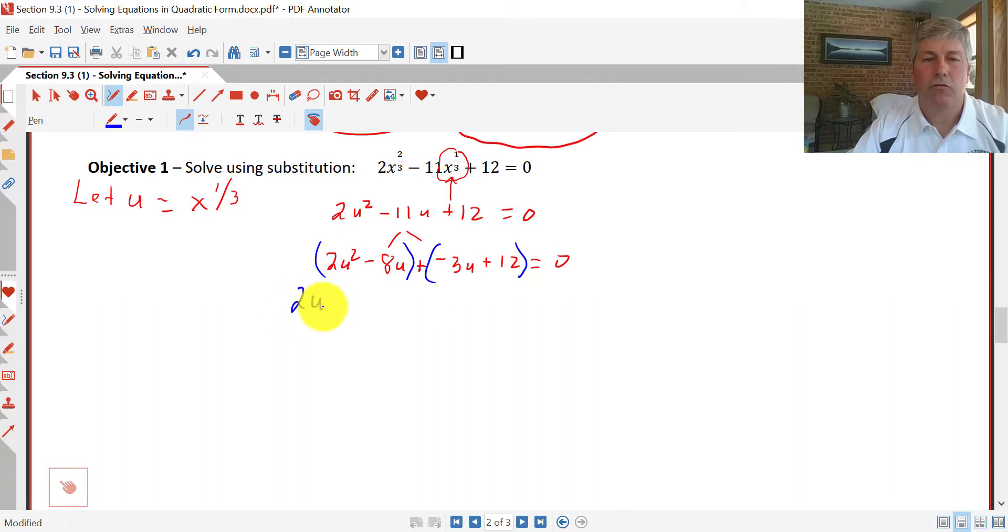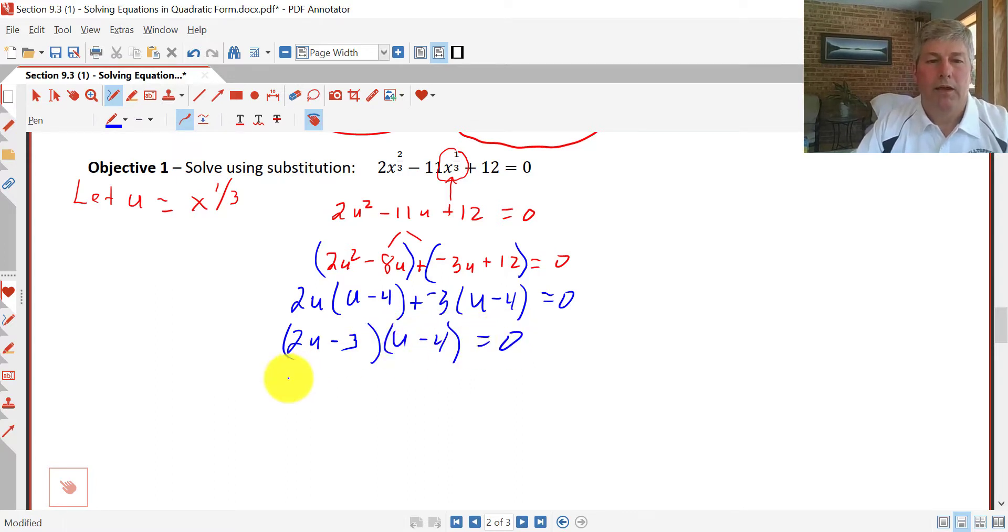So we group it, and we take out our greatest common factor. It looks like we have a greatest common factor of 2u here. So we take 2u out, and we get u - 4. So we need u - 4 left behind. We factor out a negative 3, and we get u - 4. So we're in really good shape here. So our factors are (2u - 3)(u - 4). It's all equal to 0. So we get our values for u. We get u = 3/2, and u = 4.